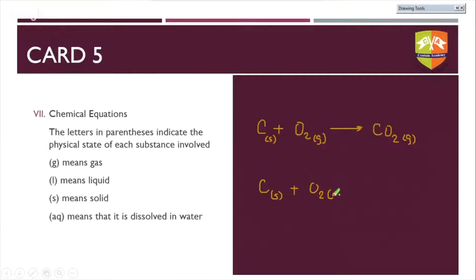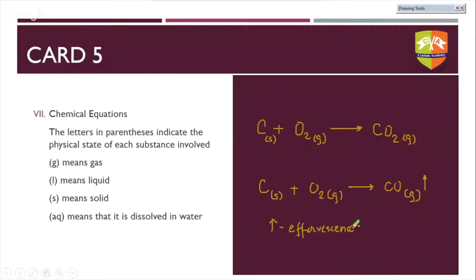Effervescence is mostly given out during solutions, but even if products are in gaseous form, it is okay to mention an upward arrow showing release of a gas. There is also a downward deposition arrow where a precipitate is mentioned. Writing symbols for deposition and effervescence are critical, as is writing the physical state. (s) means solid state, (g) means gaseous state — written as subscripts.